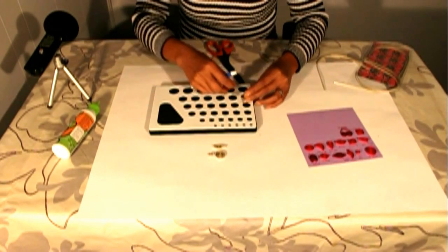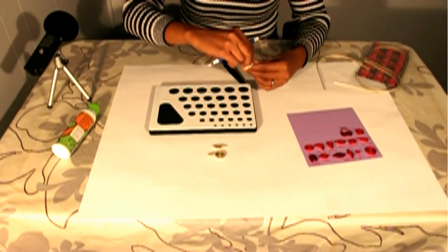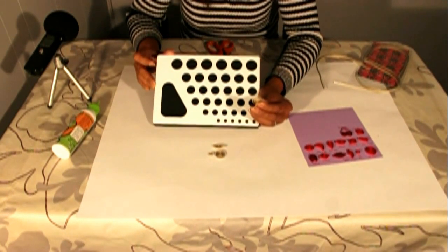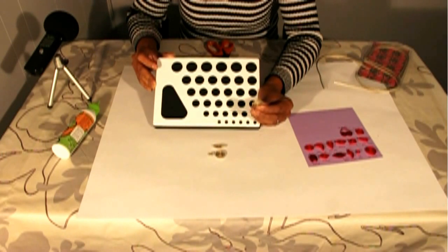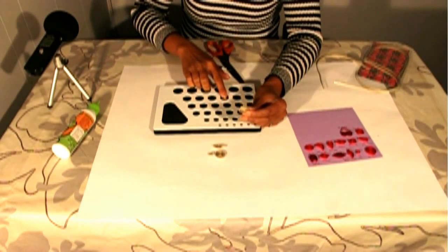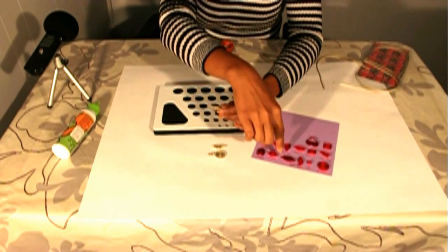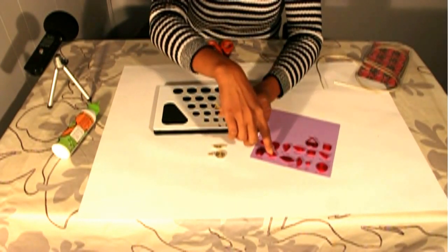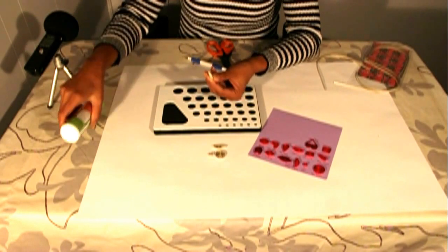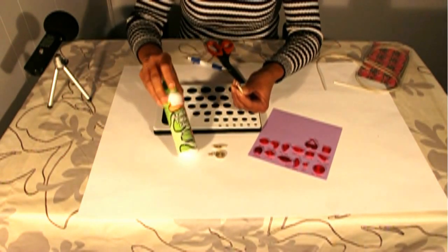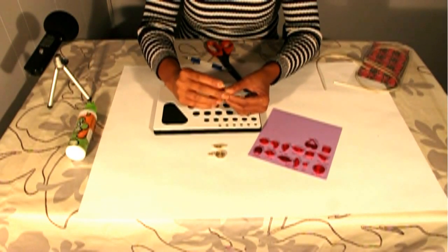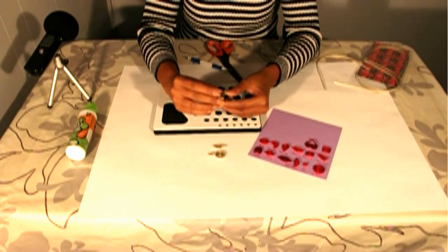Put it in the quilling board. The use of this quilling board is to get the same shape if you want to have the same shape on all of the different styles of your quilling. And just put some glue at the end of your paper to close it. And push a little bit to make it dry.